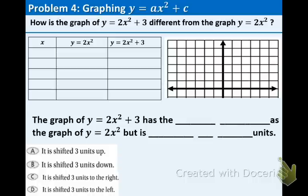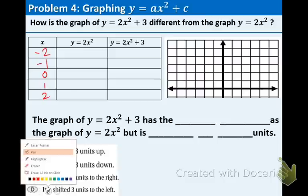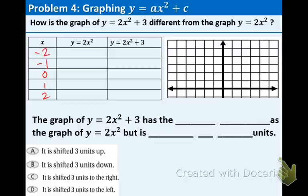Let's take a look at example four. How is the graph of y equals 2x squared plus 3 different from the graph y equals 2x squared? Well, since we don't have the graphs, we should graph them for sure. Let's choose small numbers such as negative 2, negative 1, 0, 1, and 2, and let's just plug them in.